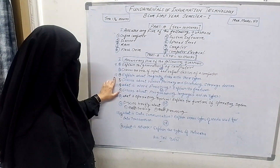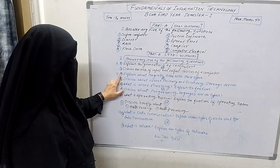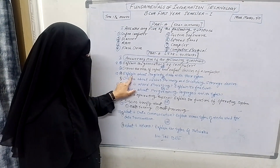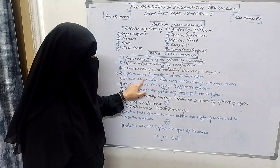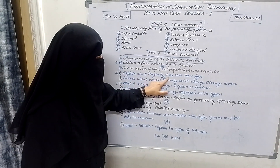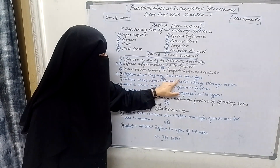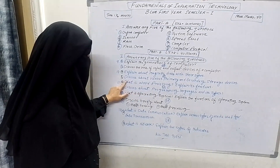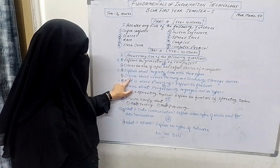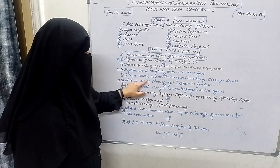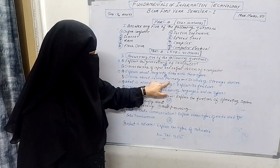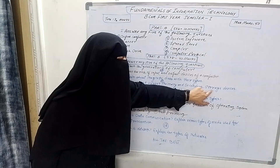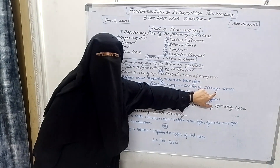Question number 10: A — Explain about magnetic disks with their types. B — Discuss about various primary and secondary storage devices.